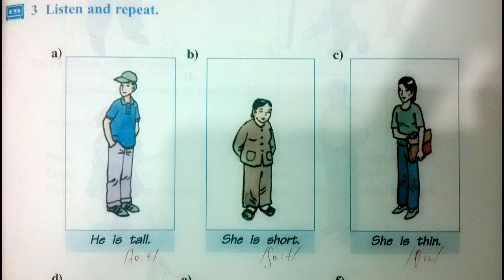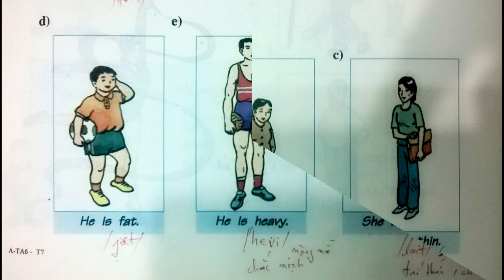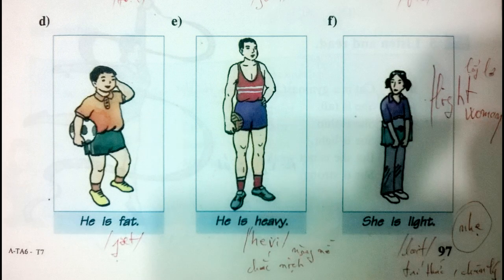Listen and Repeat. A: He is Tall. B: She is Short. C: She is Thin. D: He is Fat. E: He is Heavy. F: She is Light.